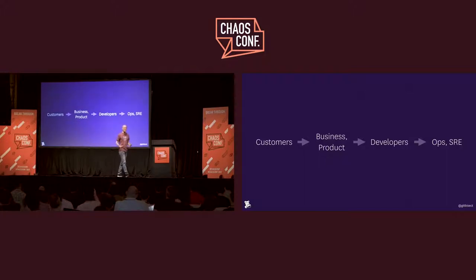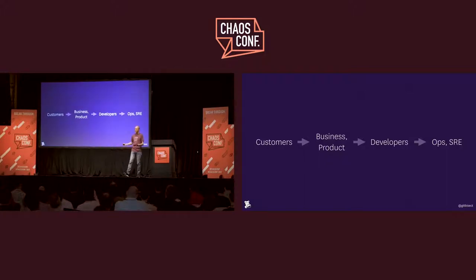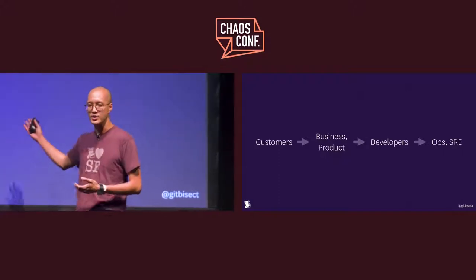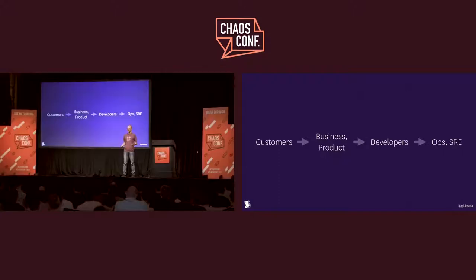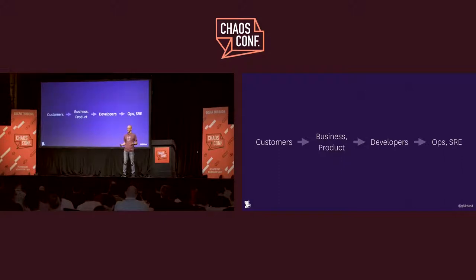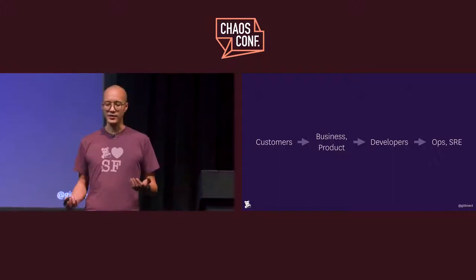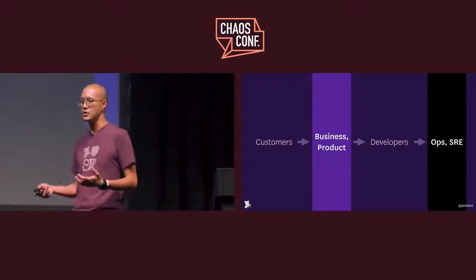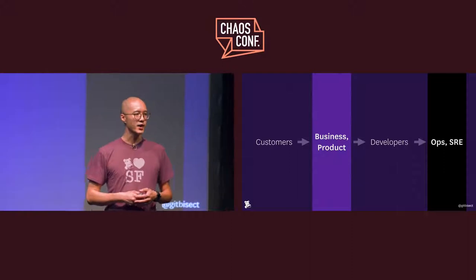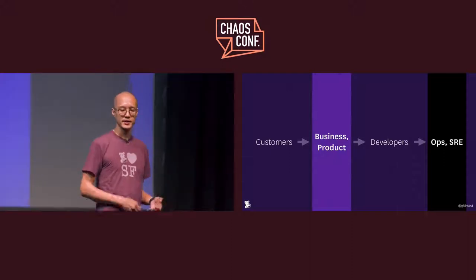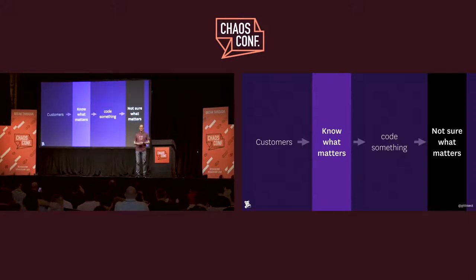Often the flow looks like this: you start with customers, and you have some business or product people that talk to those customers. They relay that to software developers as requirements for some new feature or functionality. Then it ends up landing on ops or SRE to ensure that this thing is reliable and stays up and running — and often that's the monitoring. The problem is that when you go from business through developers as an intermediary, ops or SRE often isn't sure what to monitor or what actually matters. Business knows what matters, developers code something, and then ops is just supposed to run it.